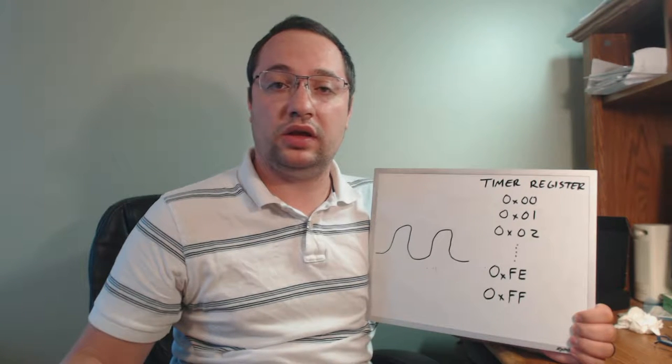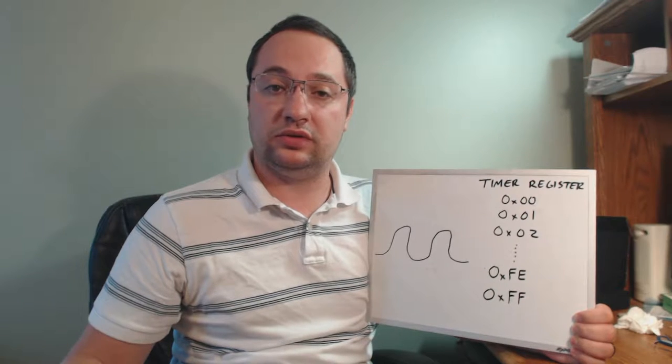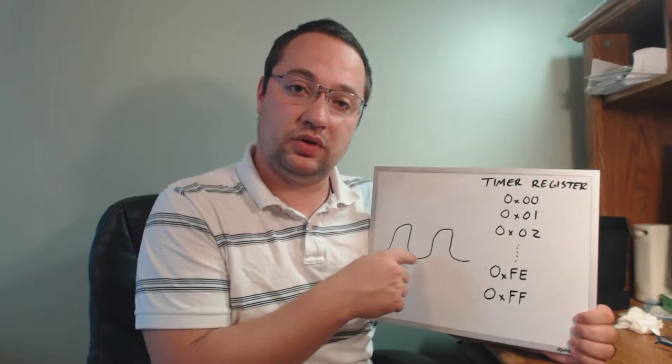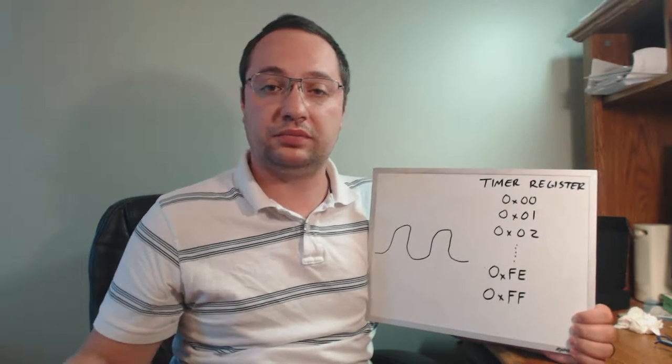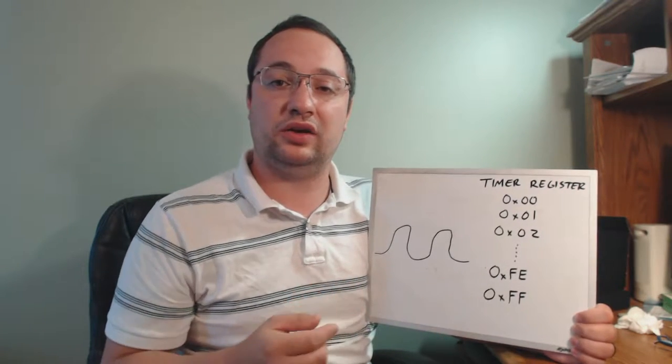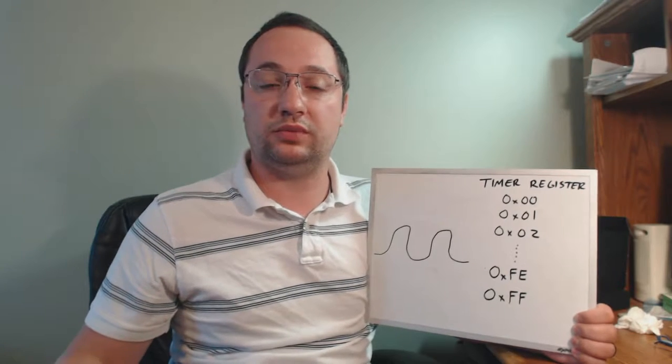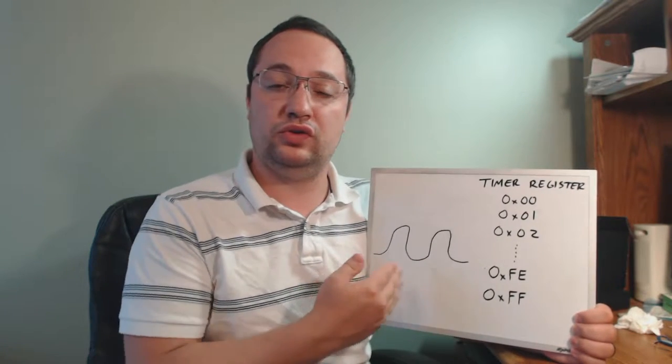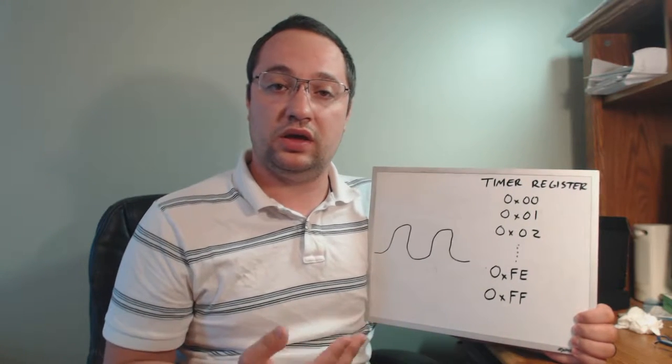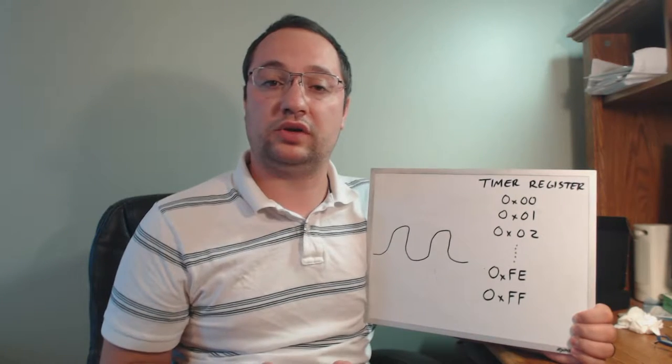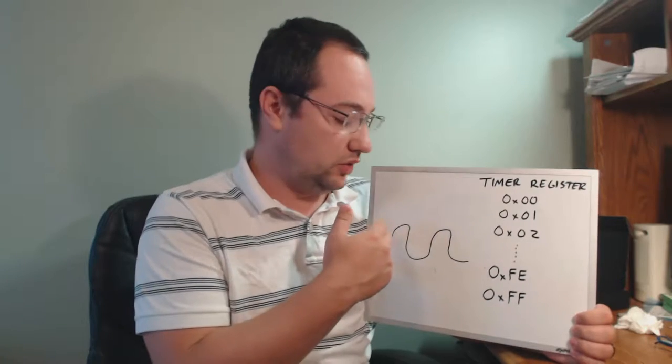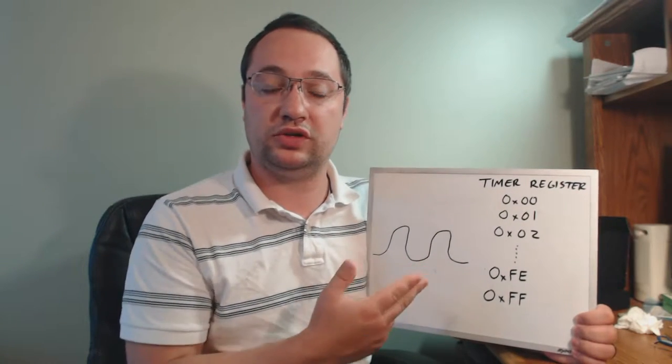In reality, a timer is actually a fancy pulse counter. The idea is that the timer can detect whenever it sees a pulse, and it will keep track of that. What gives timers their power is by selecting where those pulses are coming from. For example, you can choose the internal clock of the microcontroller. And because you know what the internal clock of the microcontroller is, you know how far apart these pulses are.